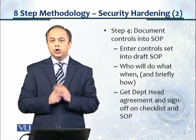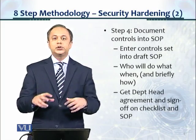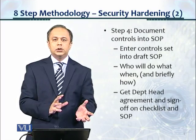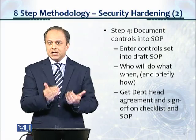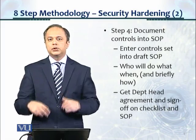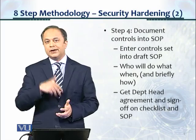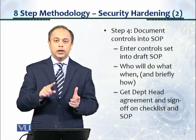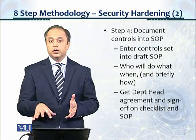Step four: you document the controls into an SOP because we're trying to establish an environment in which there's a process, and for a process to exist it has to be documented. We're not going to get into too much documentation because we have limited energy and time, and we have to direct that into hardening the assets. There's a minimal amount of checklist development in SOP so that this becomes part of the culture of the teams. You enter the control set into the draft SOP — who will do what and when — and then you get the department head to agree and sign off on the SOP.